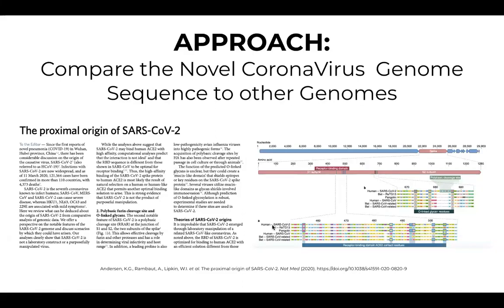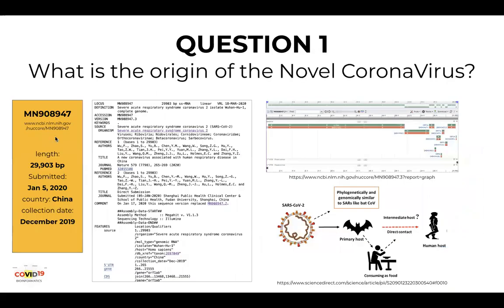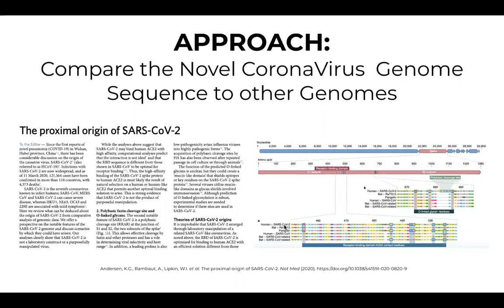They used only six sequences. Those sequences: one came from humans — SARS coronavirus 2 — that's the same sequence we talked about, MN908947. Then they took a few others.